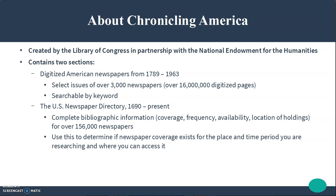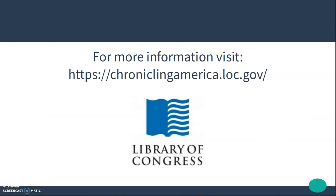The other section is the U.S. Newspaper Directory, which covers 1690 to the present day. And that provides complete bibliographic information, the coverage, frequency, availability, and location of holdings for over 156,000 newspapers. You can use this to determine if newspaper coverage exists for the place and time period that you are researching and where you can access it.